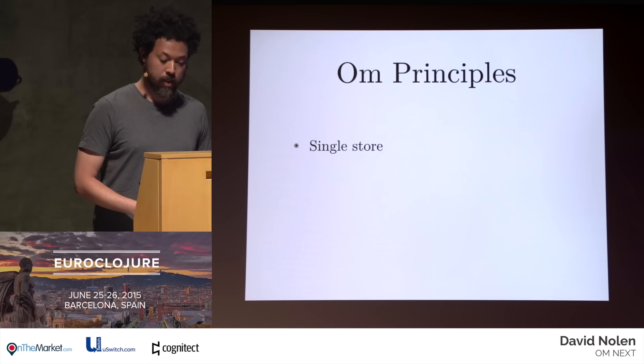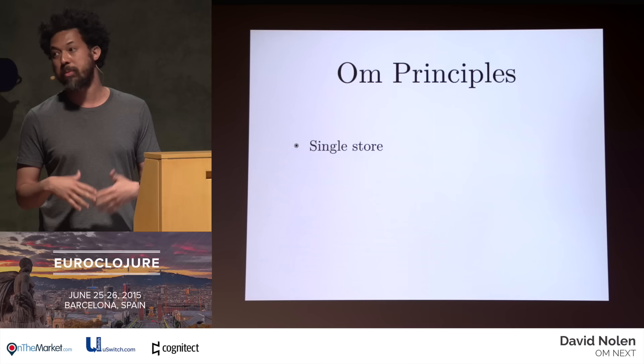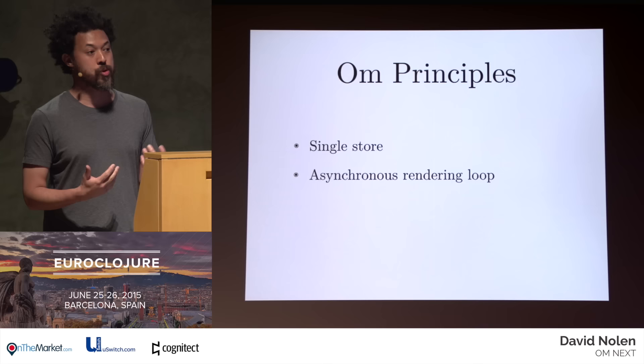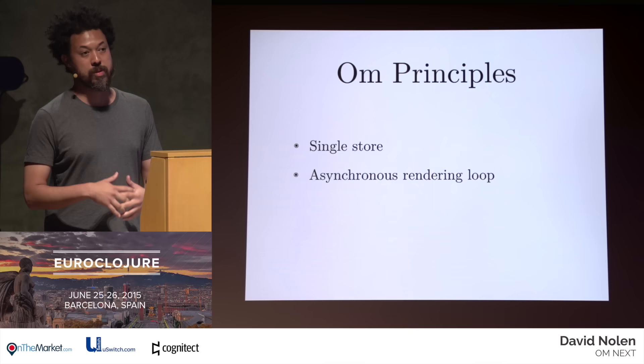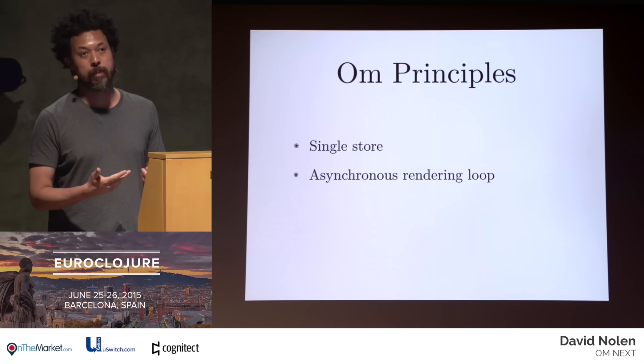Om has some core principles. Om is single store — you put all your state into one place, similar to how we think about databases. There's an asynchronous rendering loop. One of the biggest mistakes in typical UI work is that people flush too soon — you have some crazy event loop, an event cascade, and everybody's flushing. This is the single biggest source of performance bottlenecks. People hack in debounce all over the place. Om forces you to think in terms of an async rendering loop that goes at 60 frames a second.